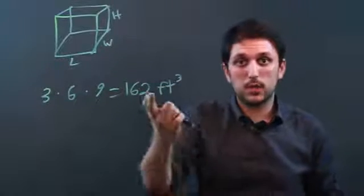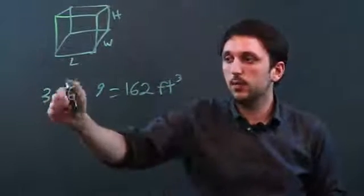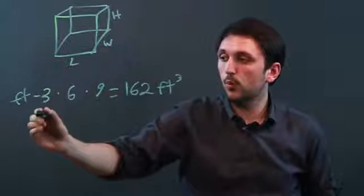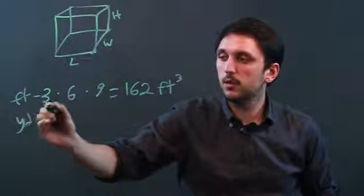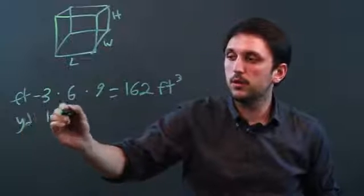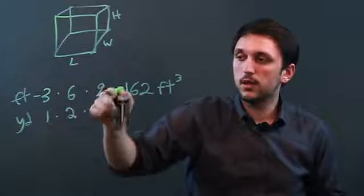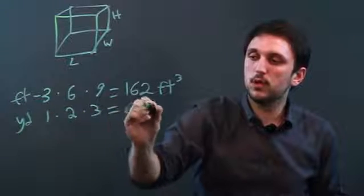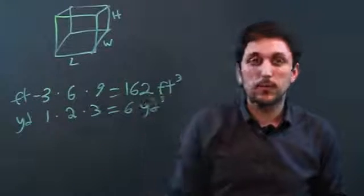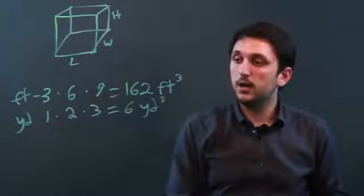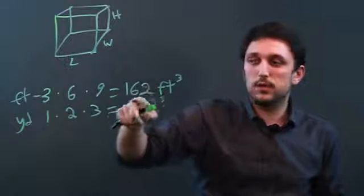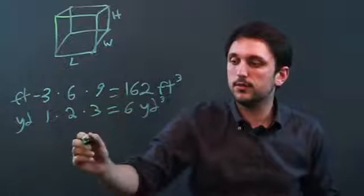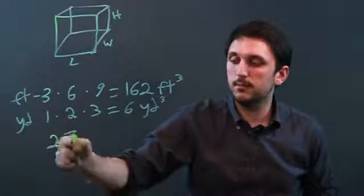Well, how many cubic yards is that? 3 feet is 1 yard, 6 feet is 2 yards, and 9 feet is 3 yards. So 1 times 2 times 3 equals 6 yards cubed. Now, the difference here is this is 27 times this — 162 divided by 6 is 27.